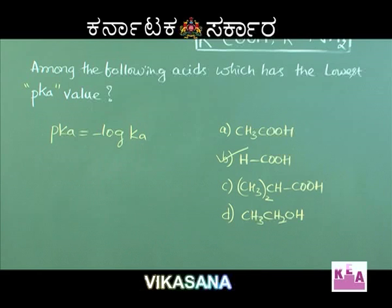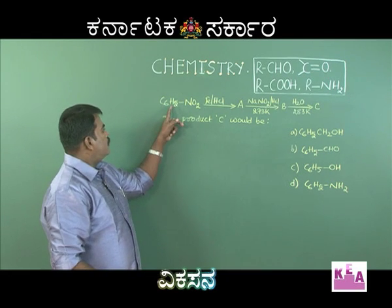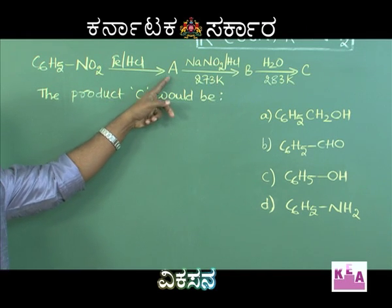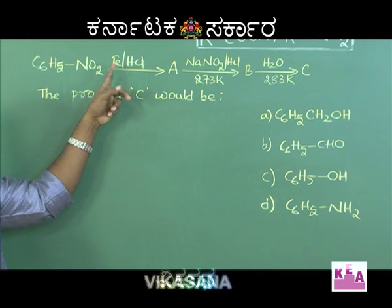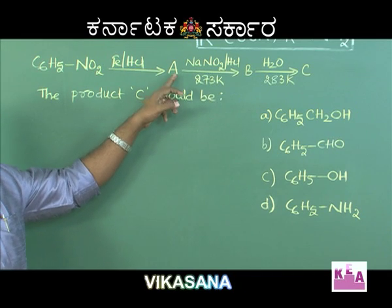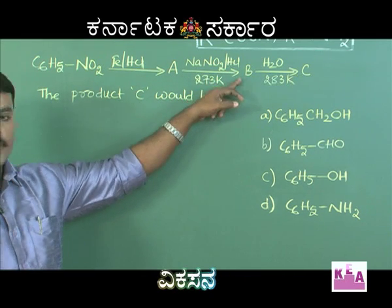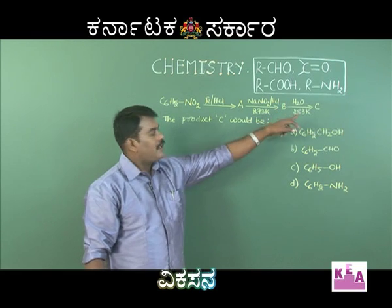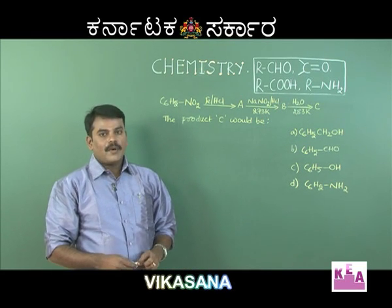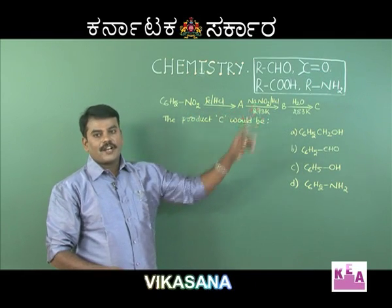The next question: C₆H₅NO₂ gives compound A upon treating with iron and HCl. A, upon treating with NaNO₂ and dilute HCl, gives compound B. Compound B upon hydrolysis gives compound C. This involves a combination of two or three different concepts.